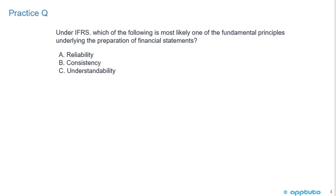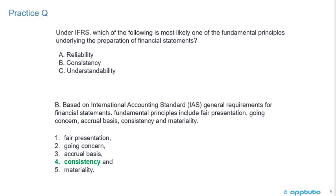An example of a practice question: Under IFRS, which of the following is most likely one of the fundamental principles underlying the preparation of financial statements? A. Reliability, B. Consistency, or C. Understandability. The correct answer is B. Fundamental principles include fair presentation, going concern, accrual basis, consistency, and materiality. Reliability and understandability sound pretty good, but the list of five principles is very exact — consistency is the correct fundamental principle.